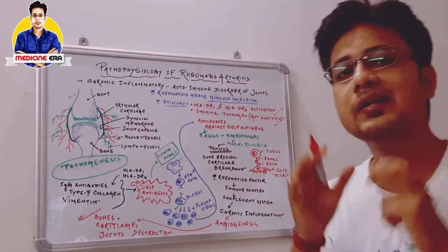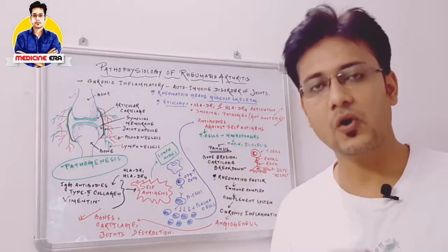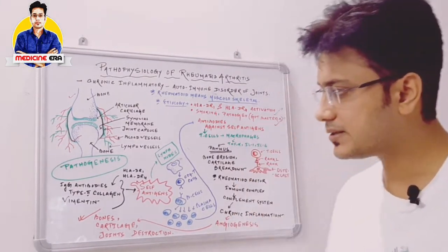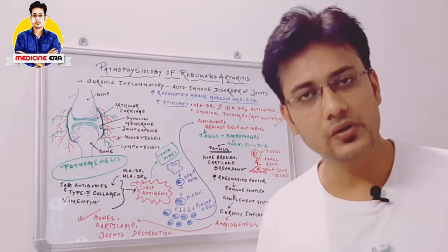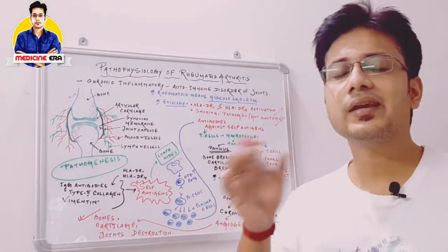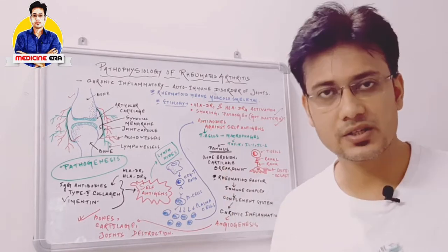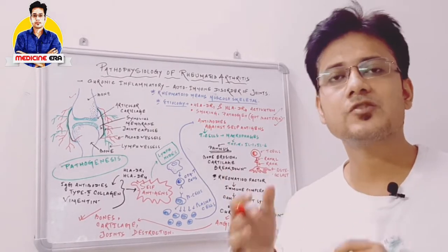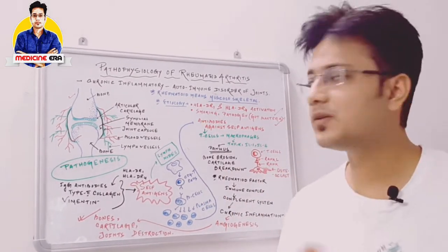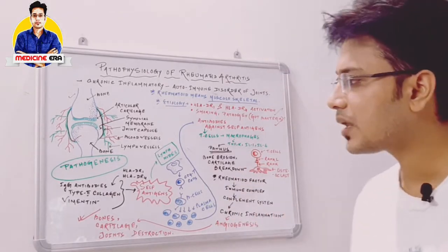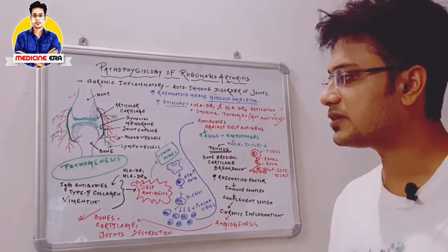We have to understand the detailed pathogenesis — how the disease progresses in the human body in case of rheumatoid arthritis. Since this is an autoimmune disorder, there must be some inflammatory reaction or antigen-antibody reaction which is responsible for this particular disorder.